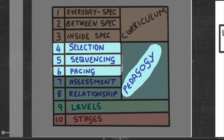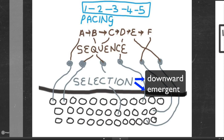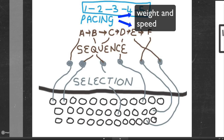In talking about selection, sequencing, and pacing, I've really only concentrated on the boundary line strength. The second half of each video will always go into the details — for example, about downward and emergent selection logics, how with sequences you either sequence the content or sequence the connections, and with pacing how you have to take into account whether you're working with something heavy or something light.